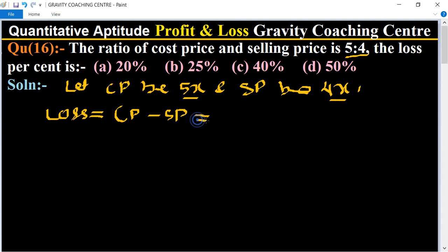So loss is 5x minus 4x equals x. So find the loss percent. Loss percent is equal to, its formula is loss upon CP multiply by 100.